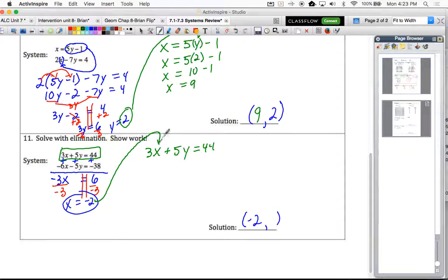So we're going to take that negative 2. Now that is the x equals negative 2. So we're going to put it in for the x in the equation. So 3 times negative 2 plus 5y equals 44. 3 times negative 2 is negative 6.